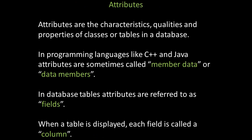Attributes are the characteristics, qualities, and properties of classes or tables in a database. In programming languages like C++ and Java, attributes are sometimes called member data or data members. In database tables, attributes are referred to as fields. When a table is displayed, each field is called a column.